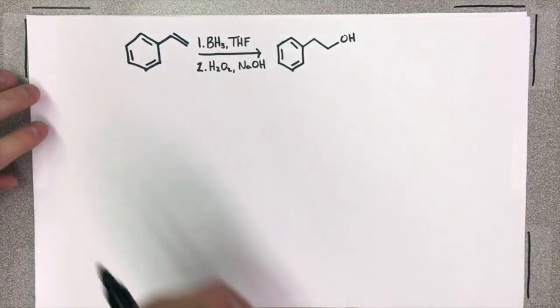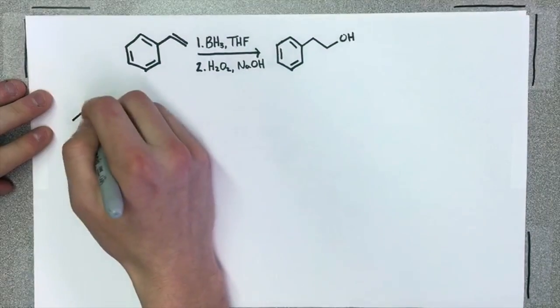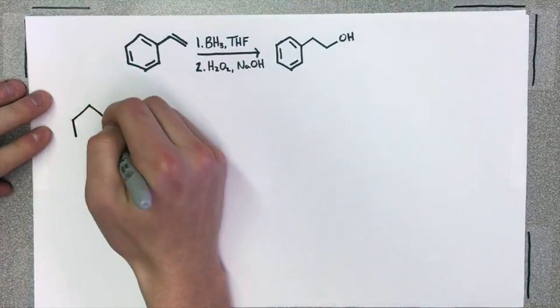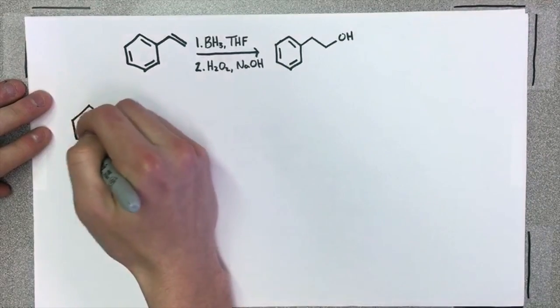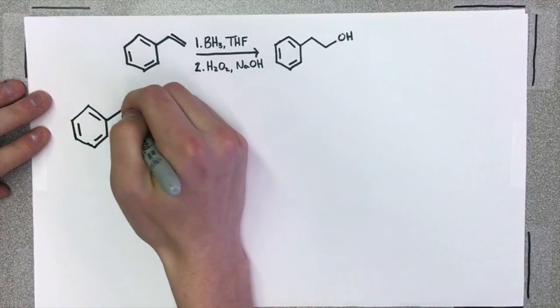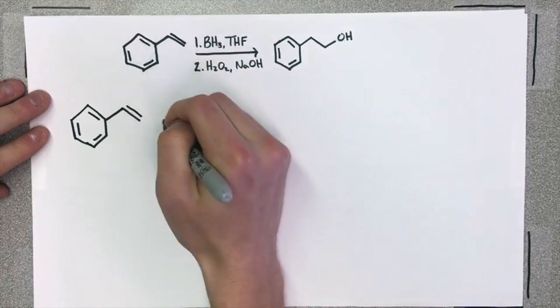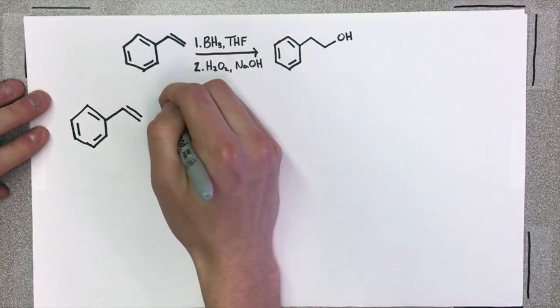So, here's our alkene. We just have a simple alkene attached to a benzene ring. And to understand this reaction better, we're going to draw out the mechanism here. So, here's our alkene, and we have the borohydride that's going to attack it.